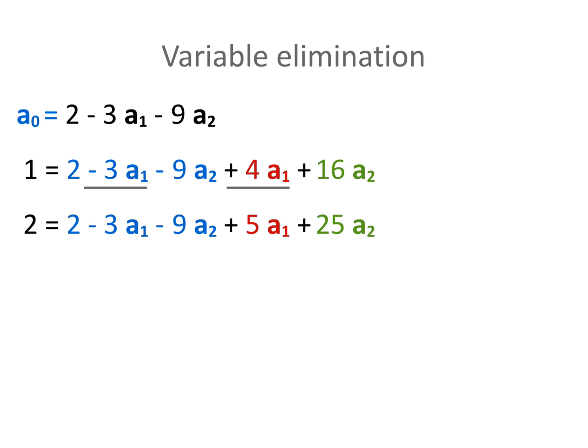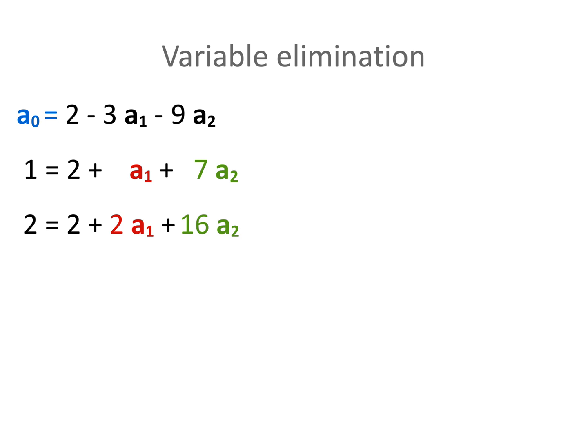Minus 3 times a1 plus 4 times a1 is just a1. And minus 9 times a2 plus 16 times a2 makes 7 times a2. So that means we can simplify the second equation as such. And similarly, the third equation simplifies to 2 plus 2 times a1 plus 16 times a2. Note that now we have simplified the last two equations to only contain two variables. A0 has been eliminated.